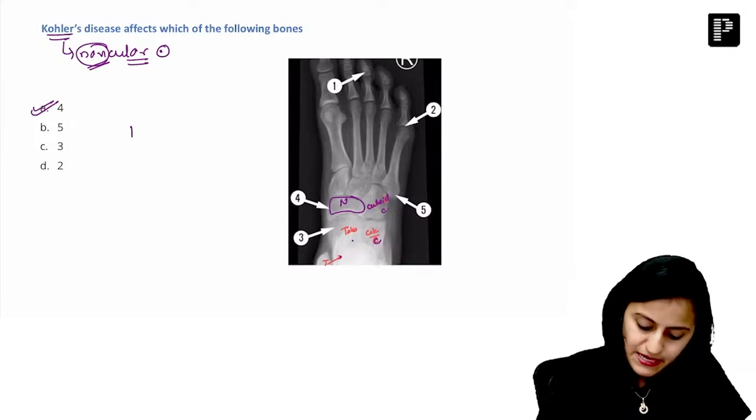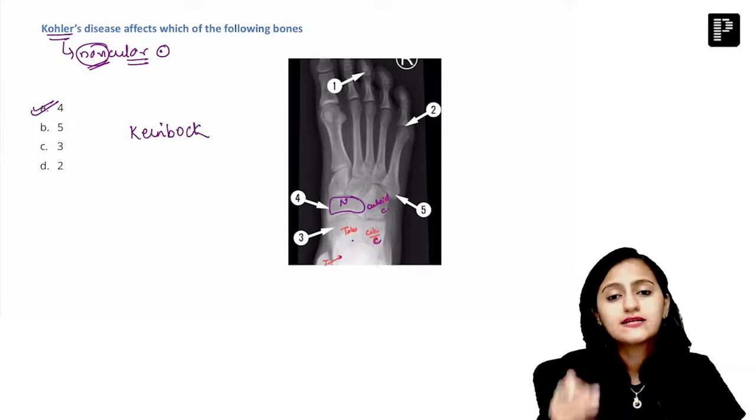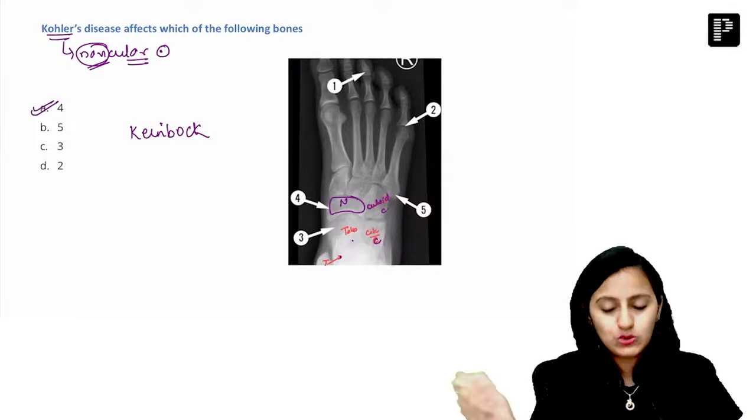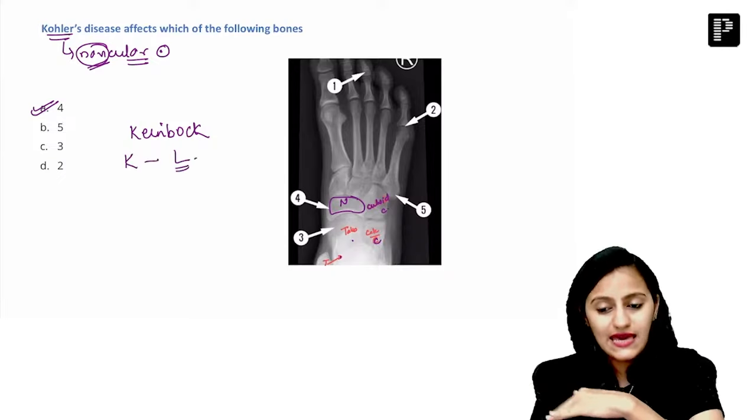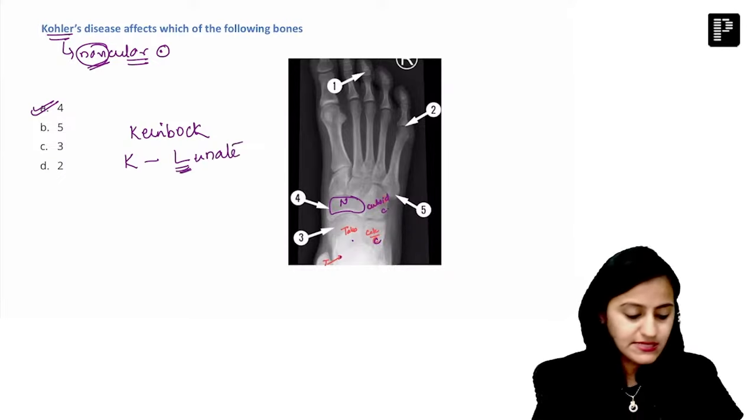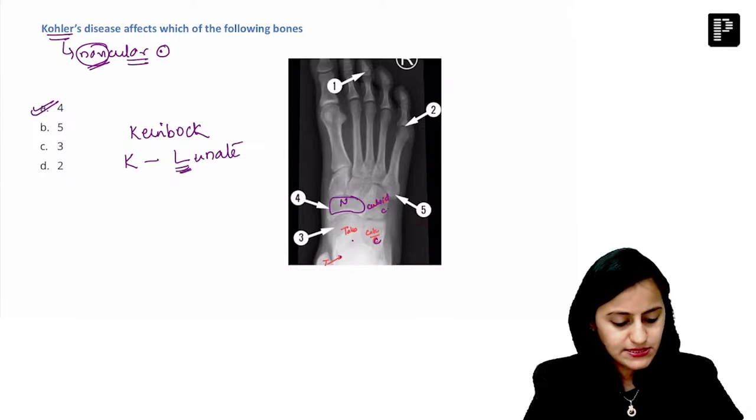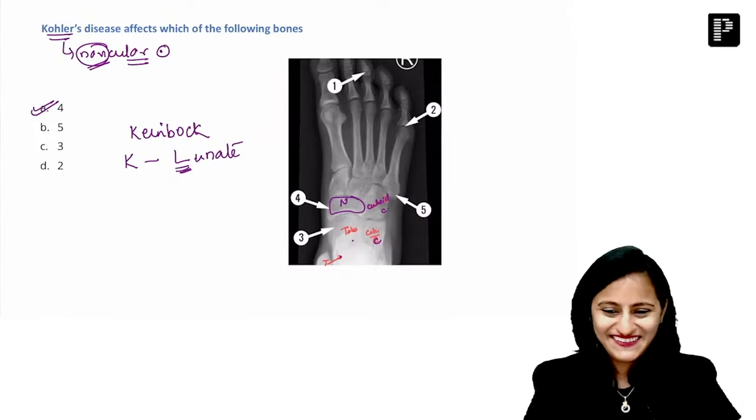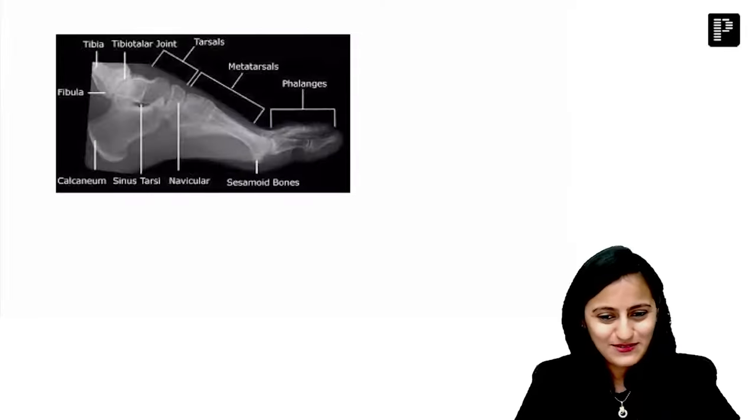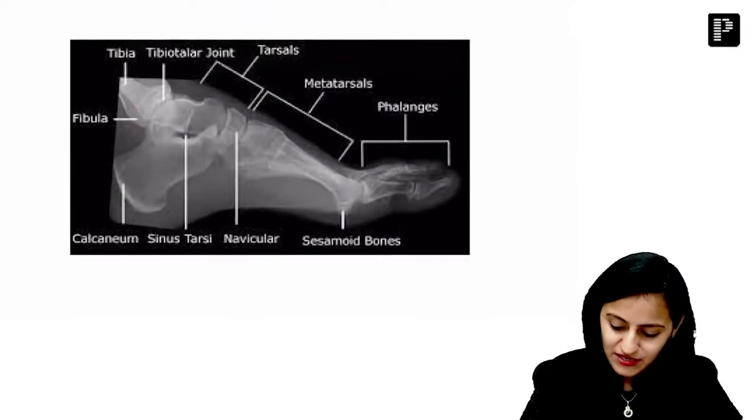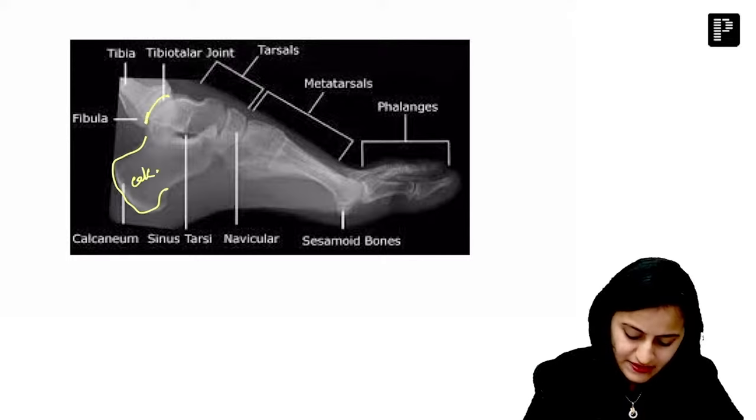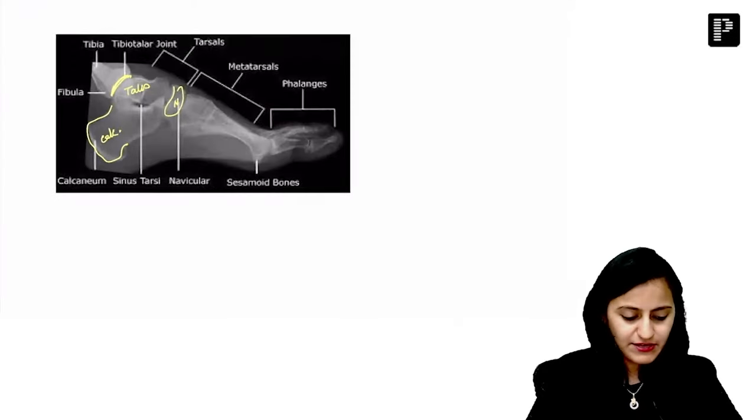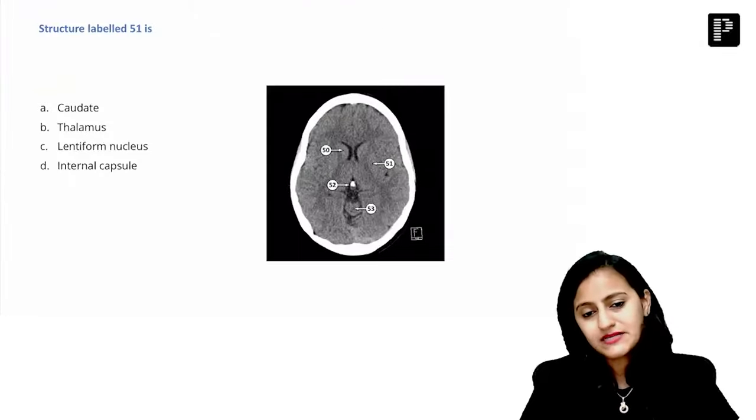So this is navicular. Please do not confuse Kohler's and Kienbock. Kohler is navicular. Kienbock - K, L alphabetically, I, J, K, L. K ke baad aata hai L. Kienbock is lunate. Okay, Kienbock is lunate. All right, so these are your tarsal bones labeled and this is your lateral view. Remember in the lateral view the heel bone is the calcaneum, the ankle joint bone is the talus, in front of talus is the navicular.